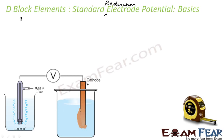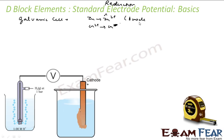Let's start with the galvanic cell. In a galvanic cell, you have zinc getting oxidized and copper getting reduced. Zinc is oxidized at the anode and copper is reduced at the cathode. So E of the whole cell is nothing but E° of cathode minus E° of anode — that is, E_reduction of cathode minus E_reduction of anode.